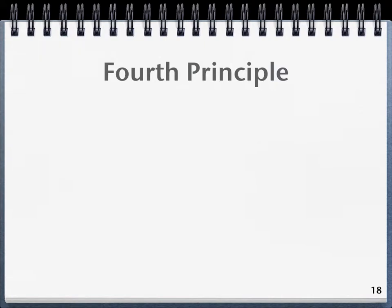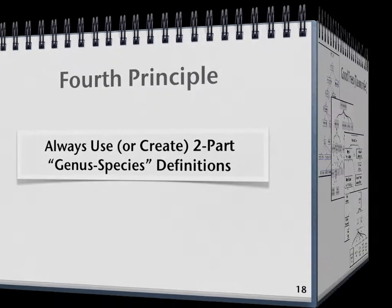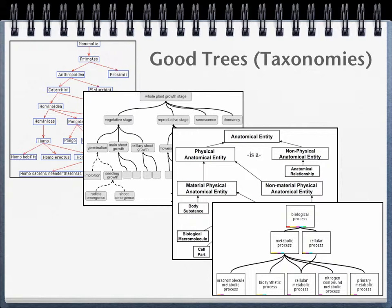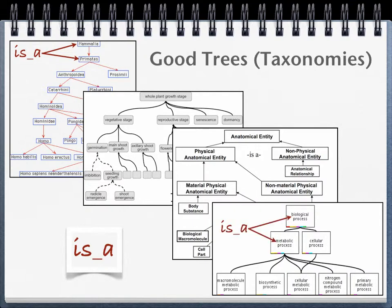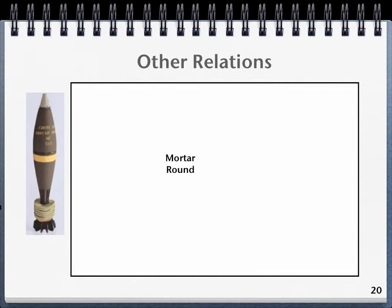Fourth principle: always use or create two-part genus-species definitions. Two-part genus-species definitions derive from taxonomical trees that represent the categories of reality. This is done by way of the is-a or subtype relation where, for example, we say that a primate is a mammal, or a metabolic process is a biological process. When creating definitions, we first refer to a thing's parent class or category in order to link it to an objectively verifiable taxonomy.